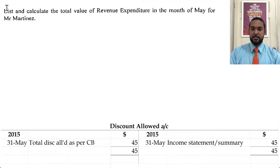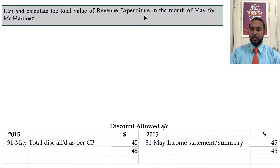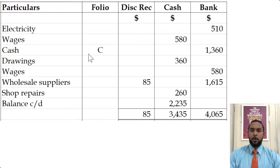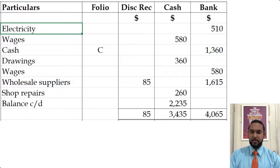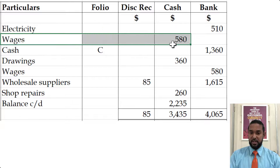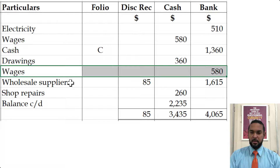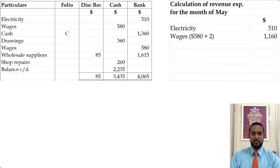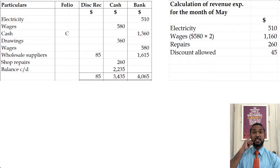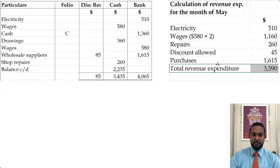The question also asks us to list and calculate the total value of revenue expenditure in the month of May for Mr. Martinez. Revenue expenditure is any expenditure not spent to acquire new fixed assets or to significantly improve the value of fixed assets. Looking at the credit side of the cash book: we have electricity, wages (twice), purchases of $1,615, shop repairs, and discount allowed as an expense. The total comes to $3,590.